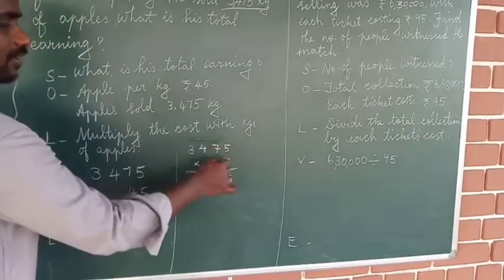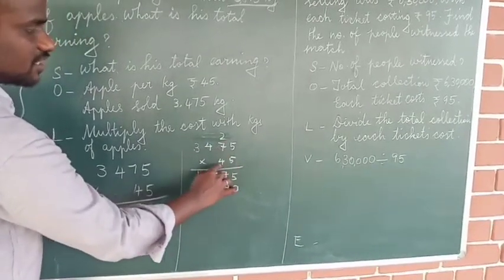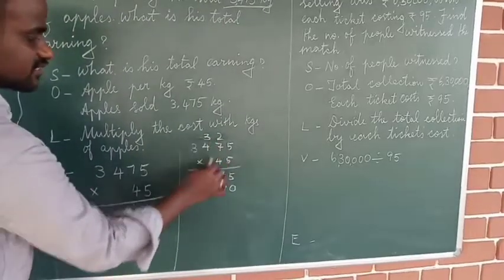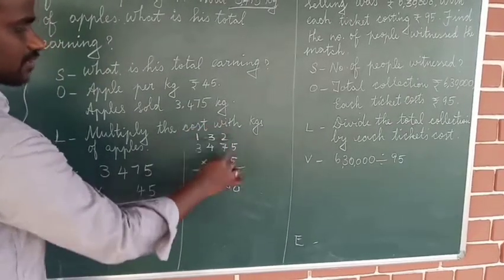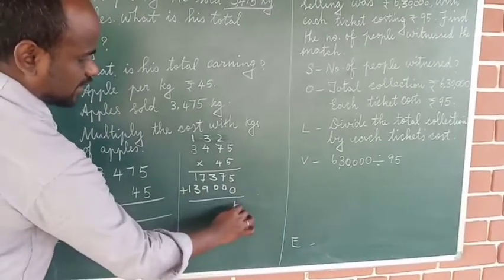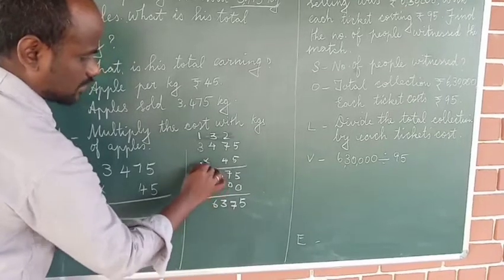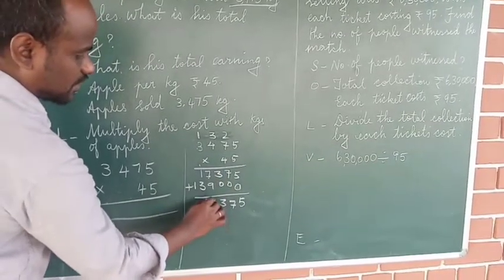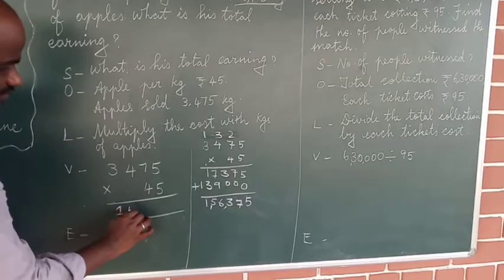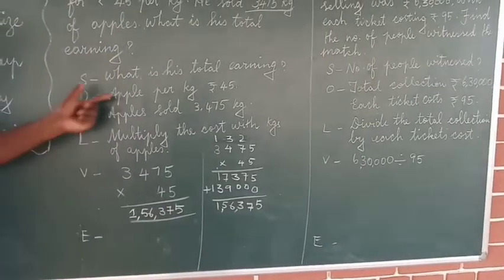Then for the tens place, put a zero. Four twos are — multiply 4 with the number: four fives are 20, remainder 2. Seven fours are 28, plus 2 is 30, remainder 3. Four fours are 16, plus 3 is 19, remainder 1. Three fours are 12, plus 1 is 13. Now add both rows: we get 1,56,875. Then use the period and name the number — 1,56,375 is the amount earned by selling 3,475 kilograms of apples.